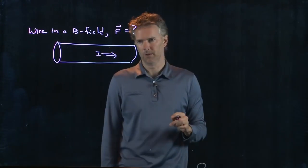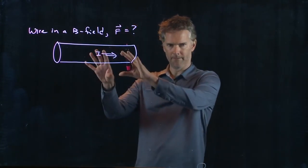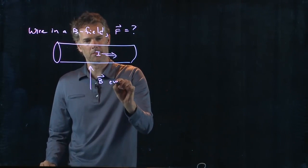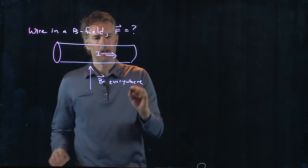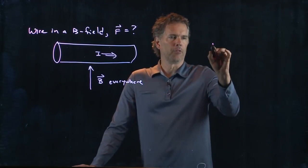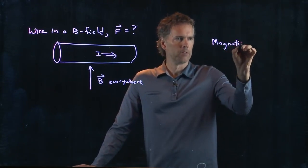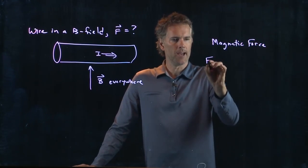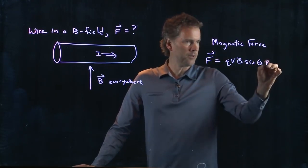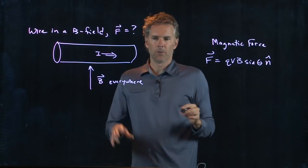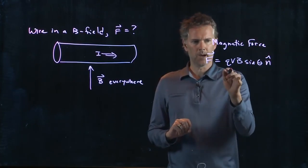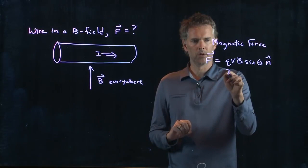How do we do this? Well, let's say this is our wire and let's put a magnetic field everywhere pointing up. Is there a force on that wire? Well, let's go back to the magnetic force for a second. Magnetic force is F equals QVB sine theta and then we have to worry about the direction from the right-hand rule. So we certainly have a B, we probably have some angle theta. What about Q and V?